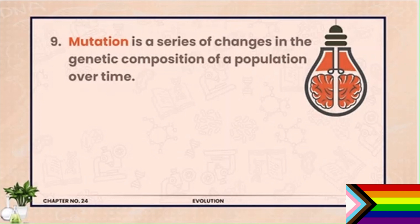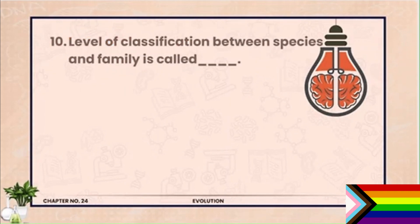Question 10. Level of classification between species and family is called genus. Kyun ke species or family ke dinmyaan me jo hai wo genus aata hai.